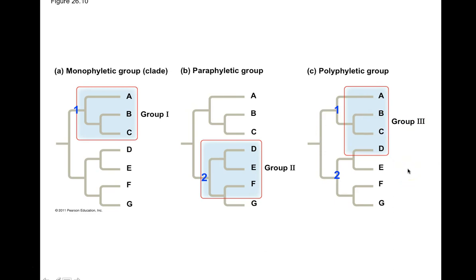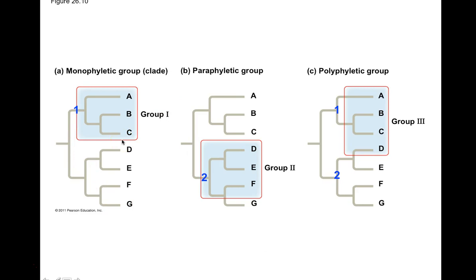Questions can test this: if you included G in the paraphyletic group, it would become monophyletic. If you included D from a different ancestor, it would become polyphyletic. By deciding whom you include and whom you eliminate, you determine whether a group is monophyletic, paraphyletic, or polyphyletic.